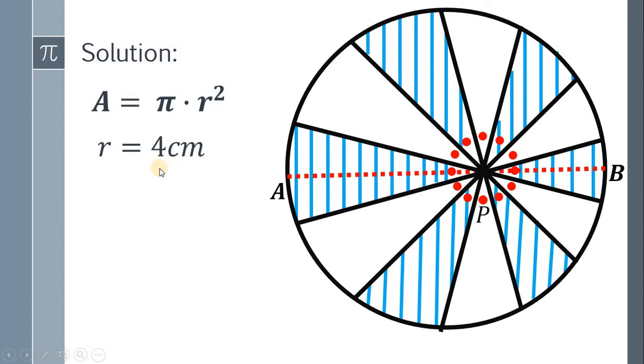Therefore, the area of the circle is π multiplied by 4² or simply 16π square centimeters. The area of the shaded region is half of the area of the circle. Therefore, the area of the shaded region is 16π divided by 2, or simply 8π.